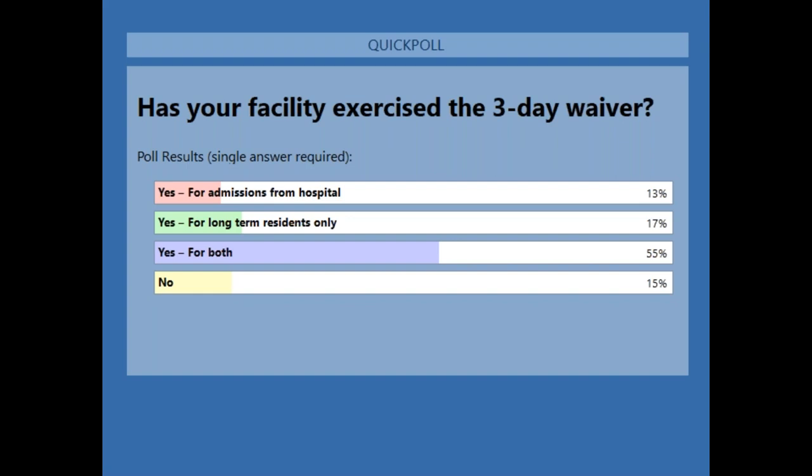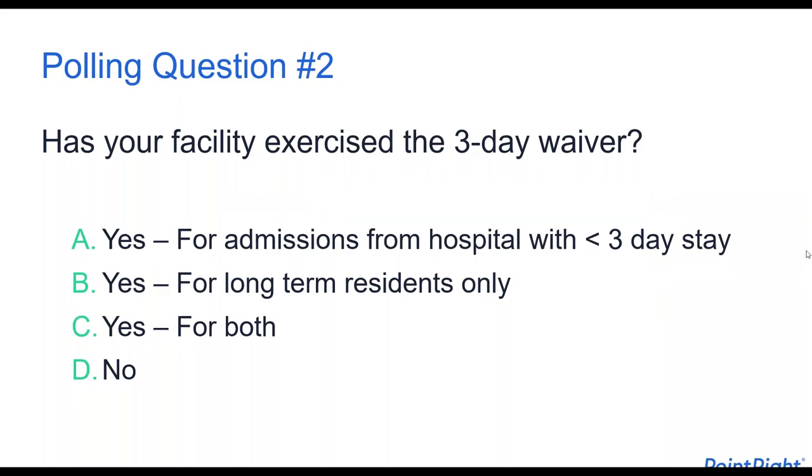Poll results show 13% are exercising the waiver just for admissions from the hospital; 17% are exercising it just for their long-termers to treat in place and give access to their Medicare benefit; the majority — 55% — are using the waiver in both circumstances; and 15% have not exercised a three-day waiver yet. Pretty good distribution.